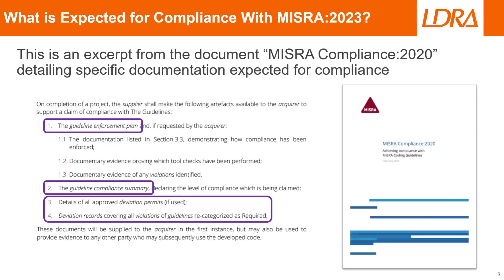So first: do you have any deviations? Are there any justifications you're providing for any rules that may have been broken but are still in your code, and why are they there? And then, did you recategorize any of the rules? MISRA actually allows you to recategorize rules up a level — so if you have an advisory rule that you want to recategorize to required, you're allowed to do that, you just need to provide a guideline recategorization plan. Now let's jump into LDRA and take a look at the various reports and features that we provide so that you can meet these requirements quickly and easily.